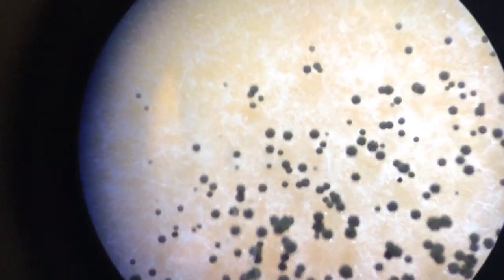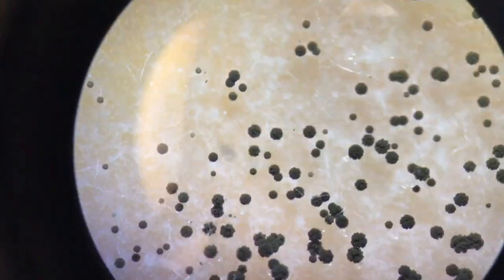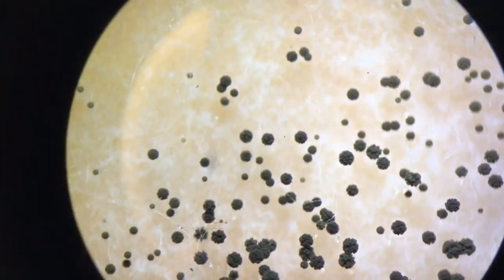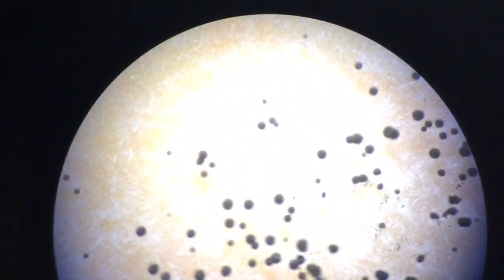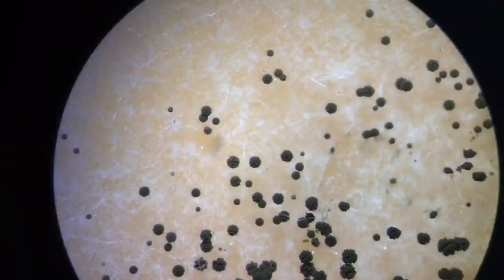As we can see here, the conidiophores have an irregular margin around them and they are dry. This is because Aspergillus produces spores out of the conidiophore that are not bound by a membrane, unlike Rhizopus.